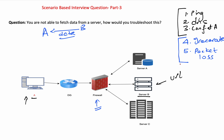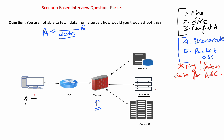An important step is to check with other servers — for example, try to ping or fetch data from servers A and C as well, to see if they have the same issue. This helps isolate the problem. If all three servers share the same firewall rule or ACL and all fail, the issue could be on the server end itself.